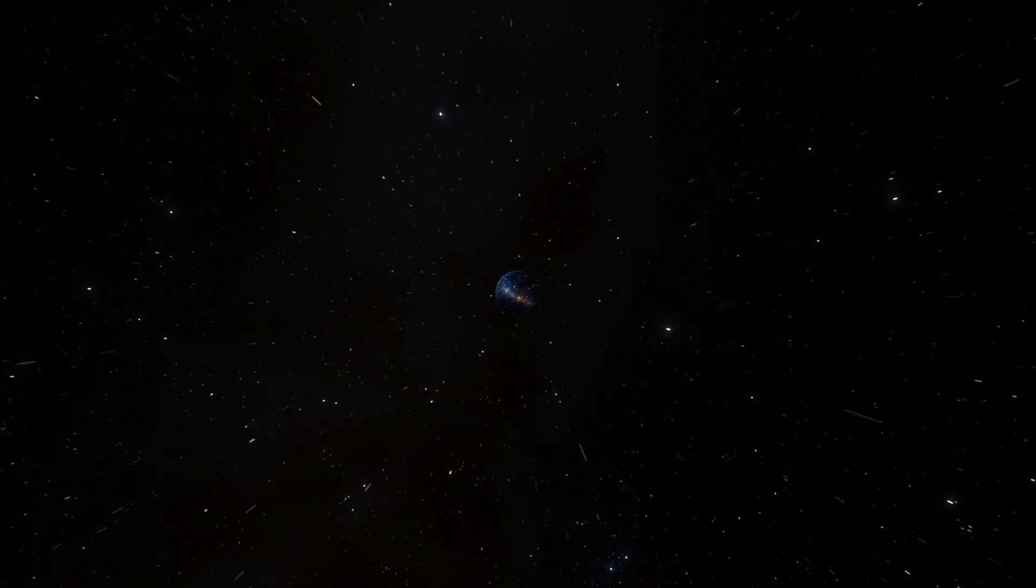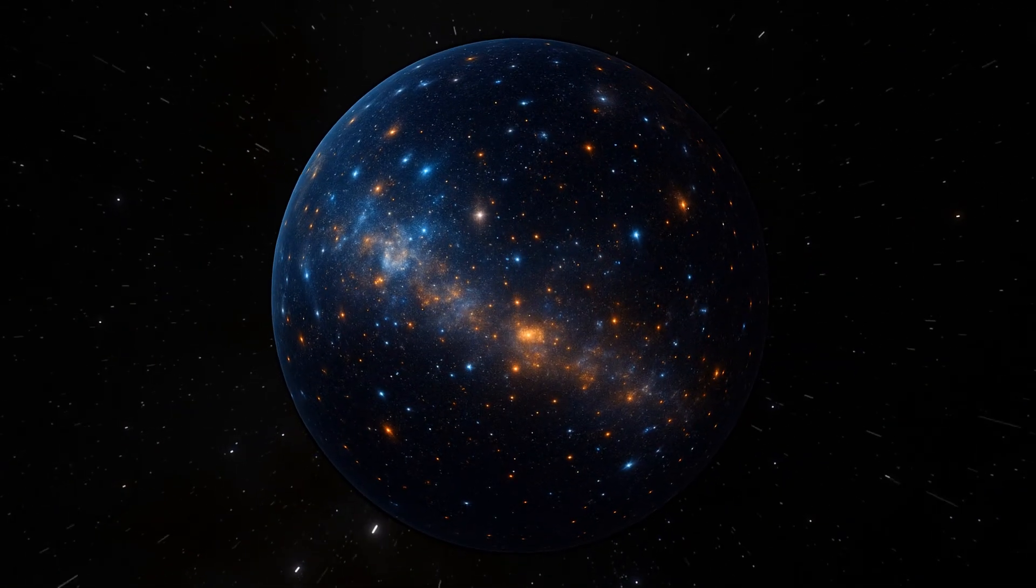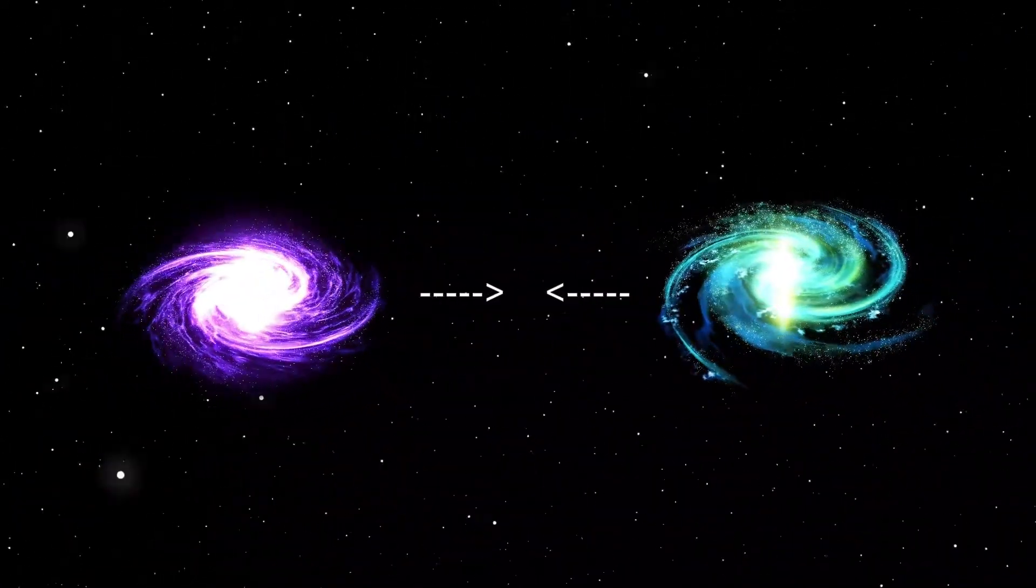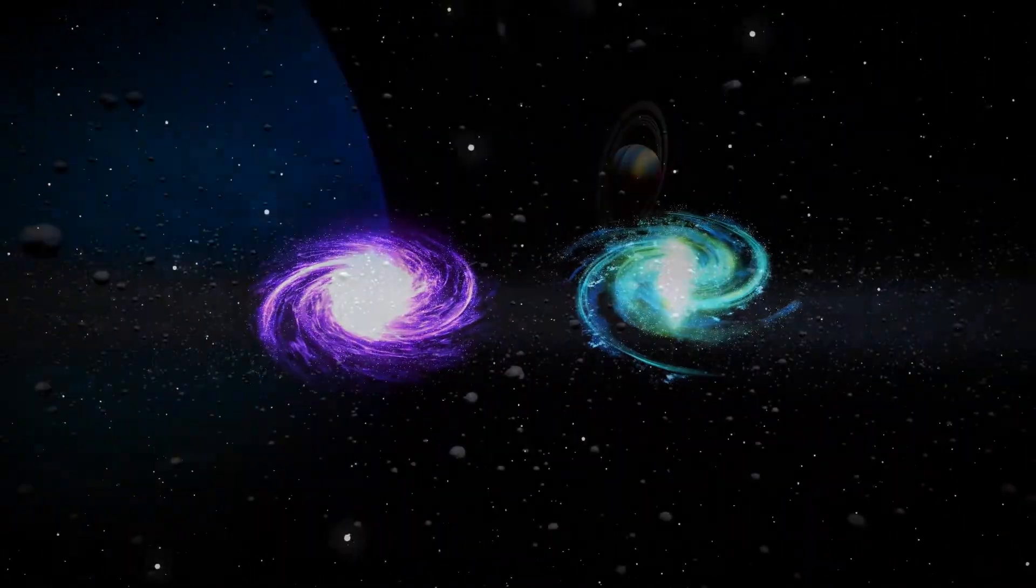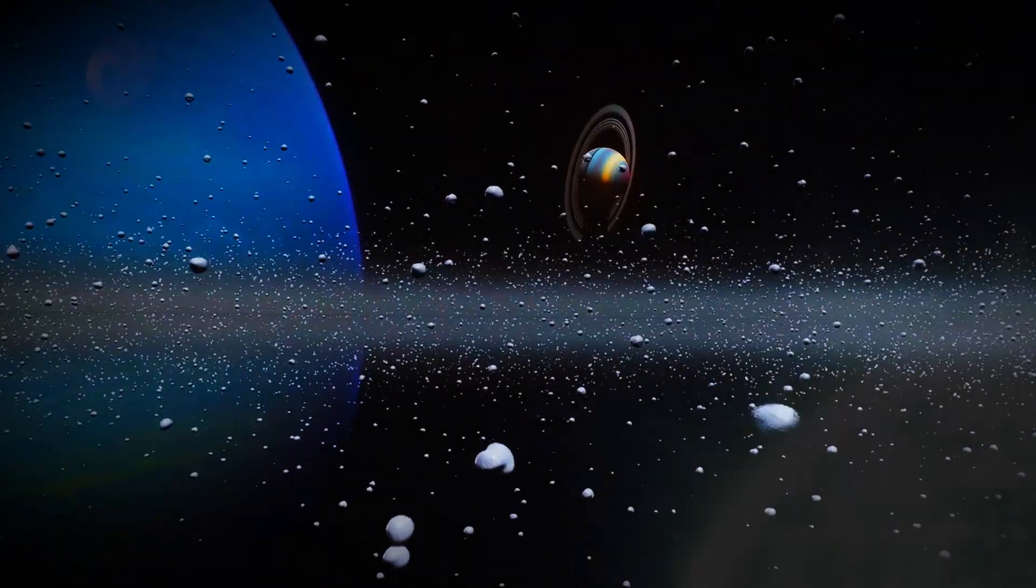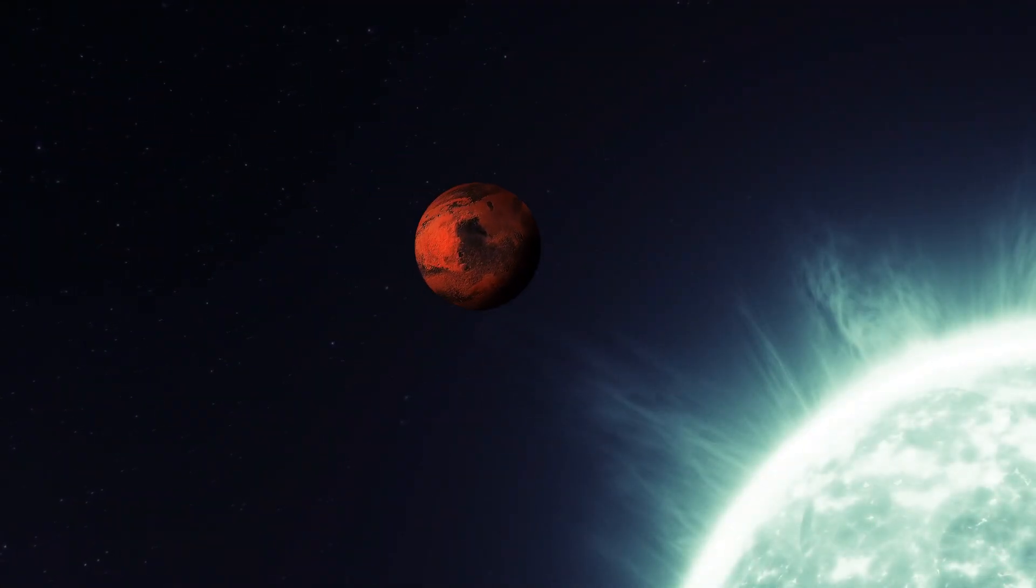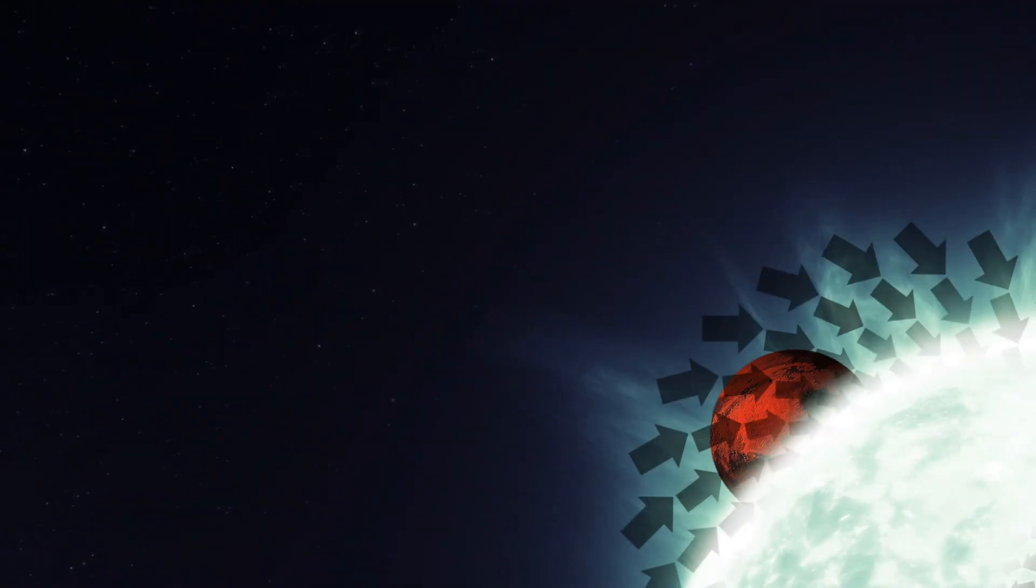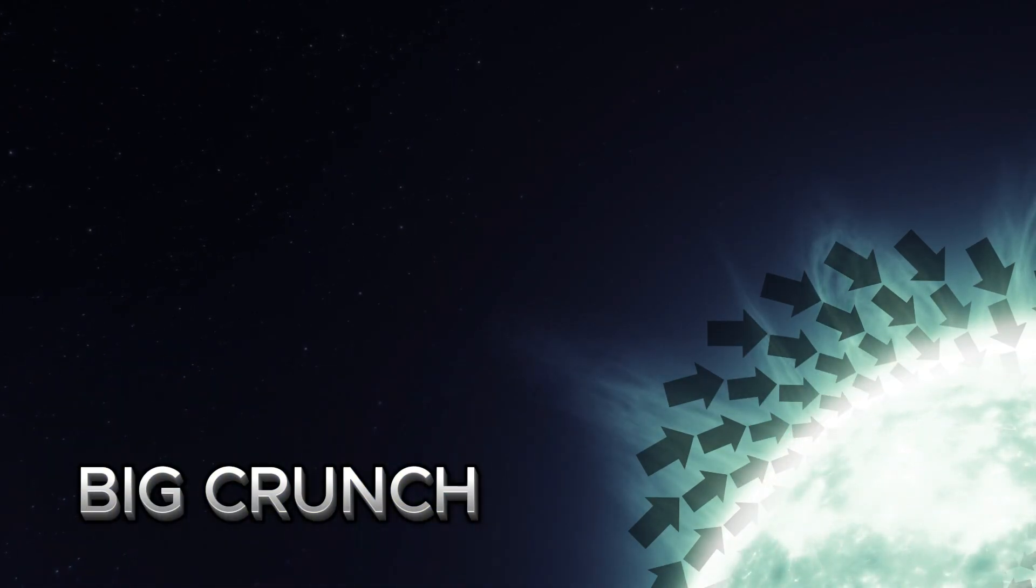Space would start contracting. Galaxies would get closer together. Cosmic structures would collapse inward, and eventually everything - matter, radiation, and space itself - would be drawn back into a smaller and smaller region. This process is called the Big Crunch, the opposite of the Big Bang.